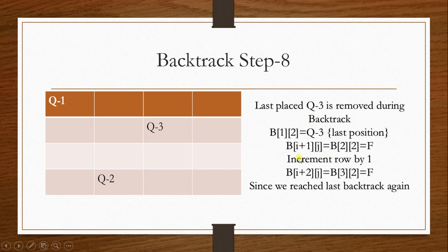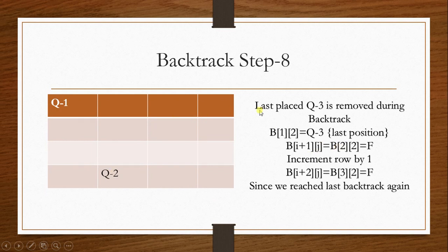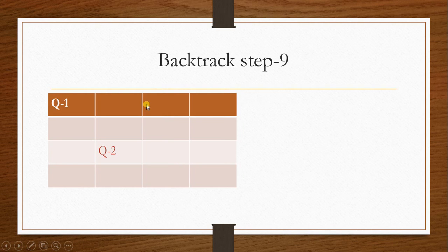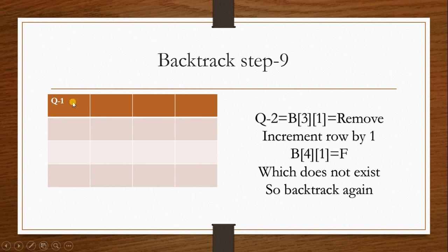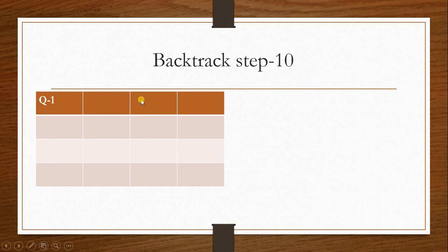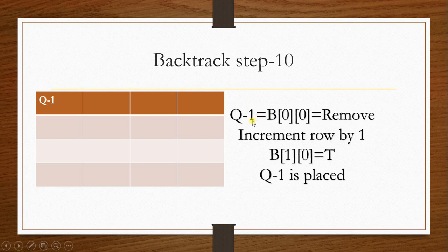Queen number 3 is removed and placed at the incremented position. Every position is checked again and backtracking is required again. Q2 at B[3][1] is removed and incremented by one row, but since position [4][1] does not exist, backtracking must continue. Q2 is removed and only Q1 remains on the board.